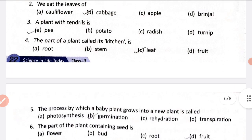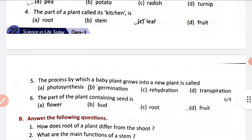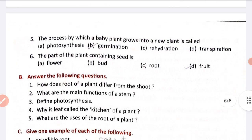Number 4: the part of a plant called its kitchen — the answer is leaf. Number 5: the process by which a baby plant grows into a new plant is called germination. In this process a baby plant grows from a seed, so it is called germination.